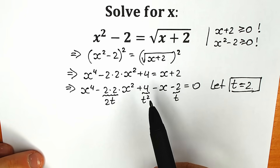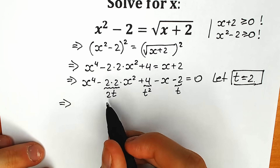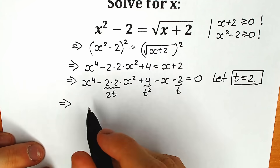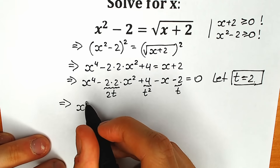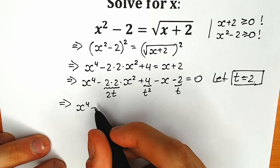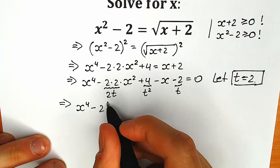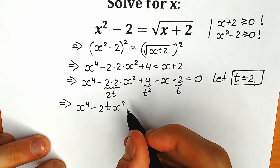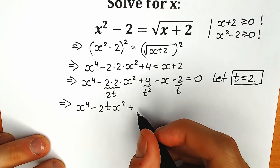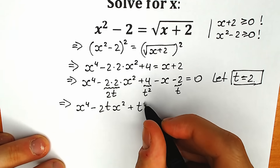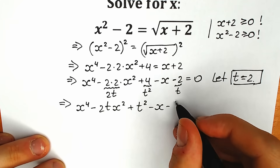According to our substitution we now have: x to the power 4, minus 2t times x squared, plus t squared, minus x, and minus t.